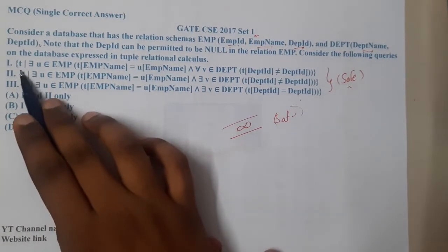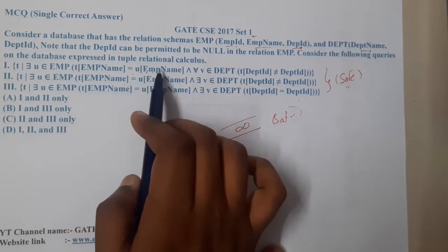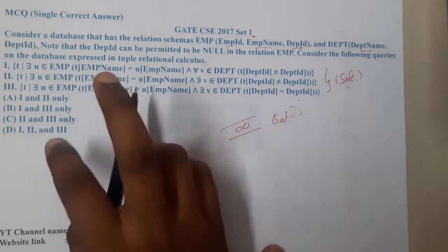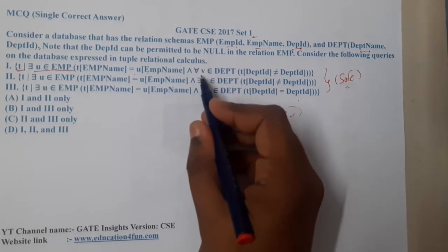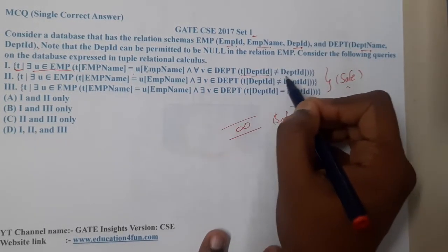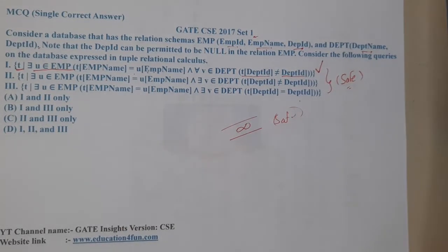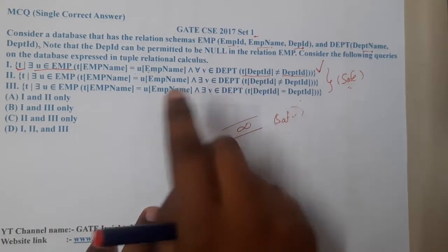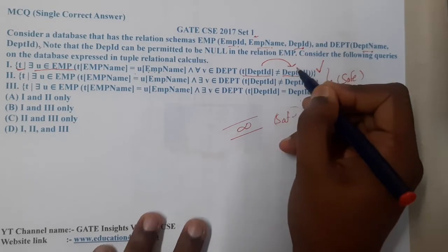For the first query, we are taking t as a row from the employee table where e of u is employee and t.ename equals u.ename — so we are comparing the same row with the same row, since u and t both belong to employee. For all values of v in department, we check t.department is not equal to department_id. Basically, we are trying to find an employee name who does not belong to any department, and this is not going to lead to an infinite result.